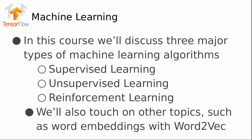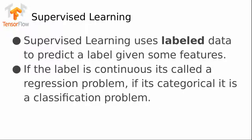We'll go through both of these categories — regression and classification. To summarize again: supervised learning uses labeled data to predict a label given some features. If the label is continuous, it is called a regression problem. If it is categorical, it is called a classification problem.